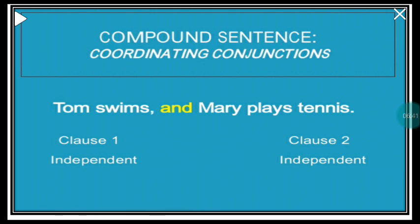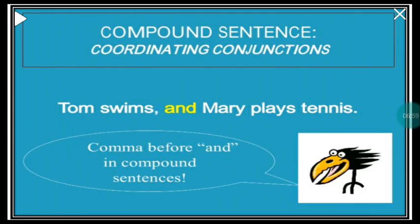'Tom swims and Mary plays tennis.' Tom is the subject, swims is the predicate. Mary is the subject and plays tennis is the predicate. Both are independent clauses joined by the coordinating conjunction 'and.' Also note that a comma is used before 'and' in a compound sentence.